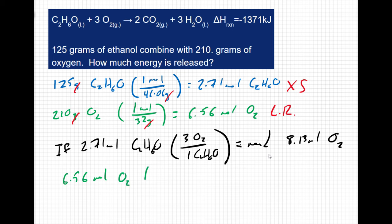Setting the ratio of 1,371 kilojoules for every three moles of oxygen and canceling out the moles of oxygen, we get 2,997 kilojoules.